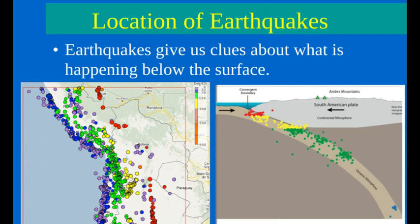Earthquakes happen when tectonic plates scrape against each other as they move. Earthquakes do not occur randomly throughout the world — they occur in a pattern, primarily along plate boundaries. In this image, we can see the western side of South America. Seismologists have mapped the depth of earthquakes that have occurred here in the recent past. The shallow ones are shown in purple and the very deep ones are in red. This is evidence that the plate on the western side, called the Nazca Plate, is being pushed under the South American Plate. This is called subduction, or a subduction zone.